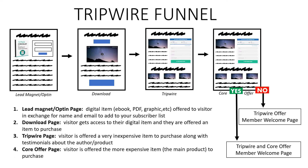The next important piece is the core offer. Once we get them to purchase that really inexpensive tripwire offer, we're going to send them to the core offer. That one's a lot more expensive, but think about what's happening — you've already given them something for free, they've downloaded it, and now you've offered them something very inexpensive. They've got their card out and they're ready, so it's easier to get them to purchase the core offer.